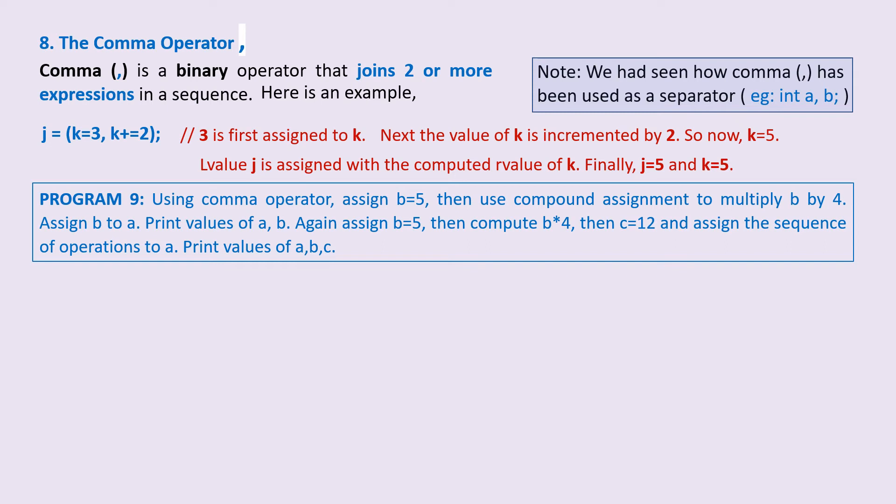Next, assign b to a, print values of a and b. Again, assign b=5, then compute b*4, then c=12, and finally assign the sequence of operations to a. Print values of a, b, c.